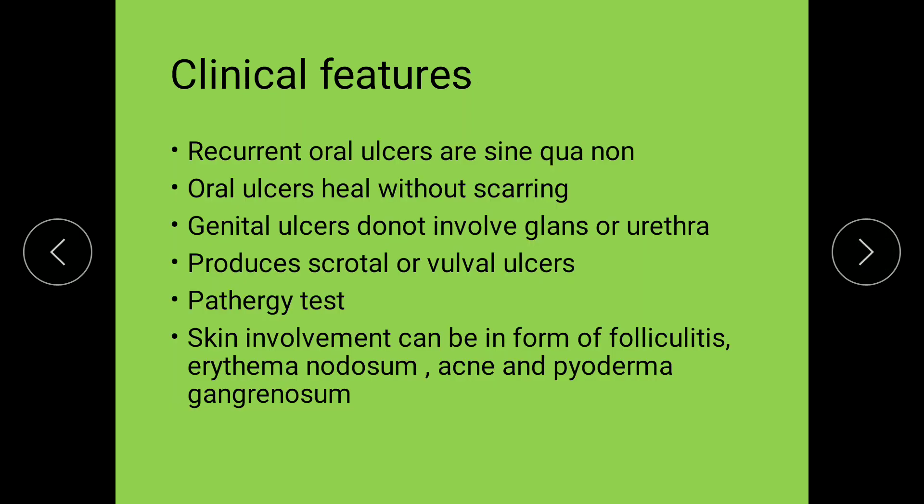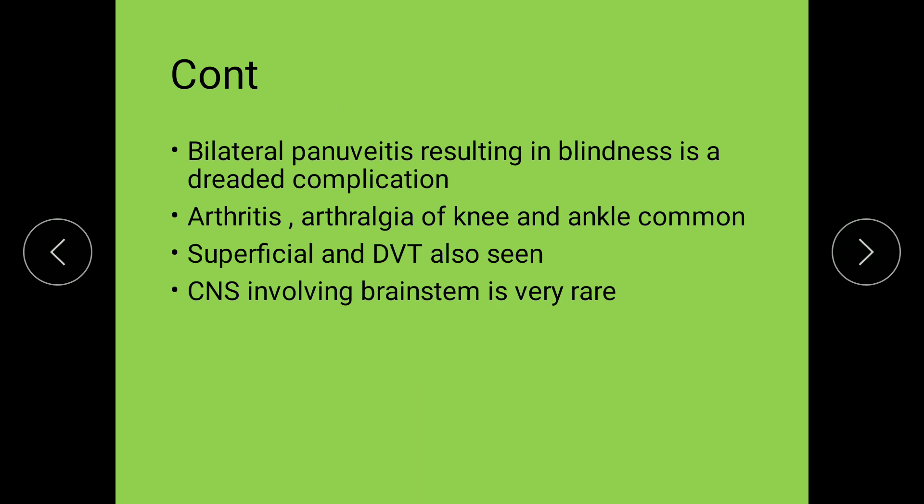Clinical features: recurrent oral ulcers (recurrent aphthosis) must be present for a diagnosis of Behçet's, and these oral ulcers heal without leaving any scars. Genital ulcers do not involve the glans or urethra; rather they produce only scrotal or vulval ulcers. The patient may have a positive pathergy test. Skin involvement can be in the form of folliculitis, erythema nodosum, acne, or pyoderma gangrenosum.